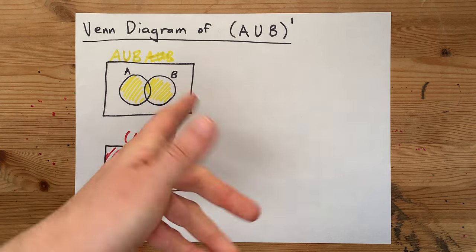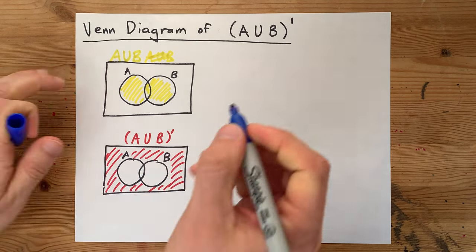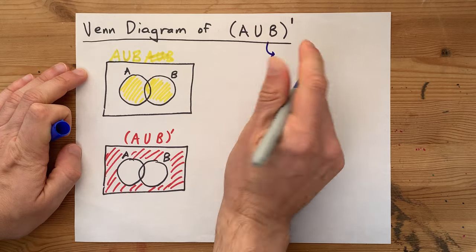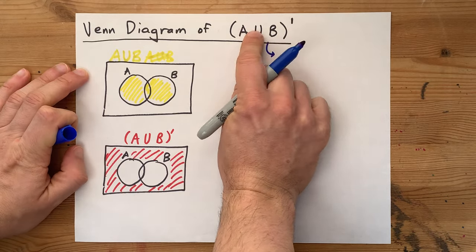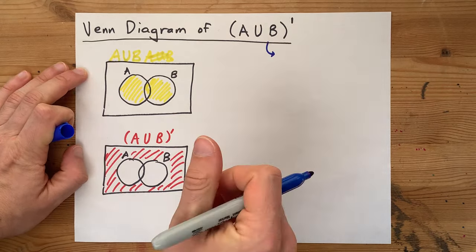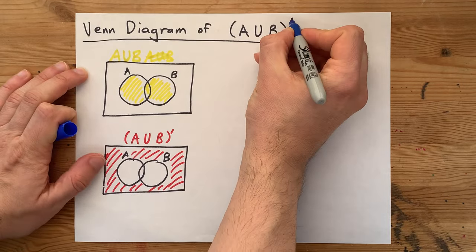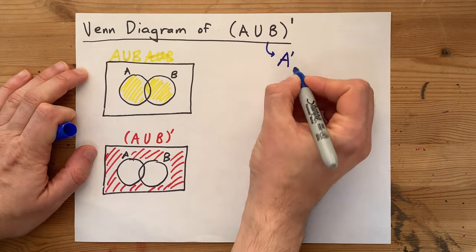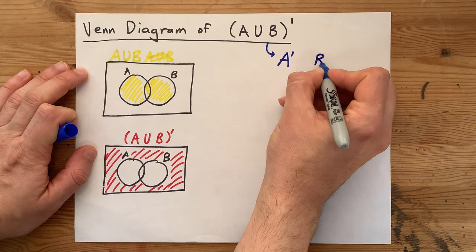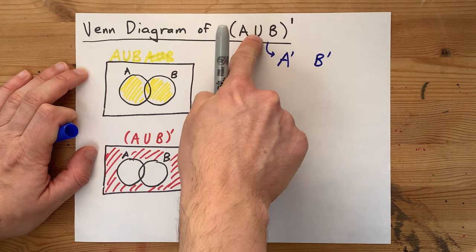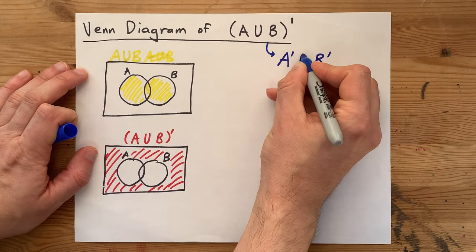Now, I'm going to show you one other way to do this. You can actually distribute this not through the brackets if you feel confident enough to do it. You have to not A, you have to not B, and you have to flip this sign, union becomes intersect.